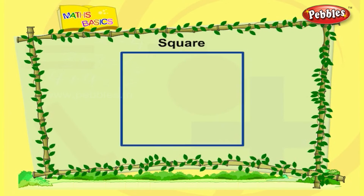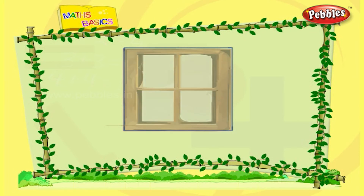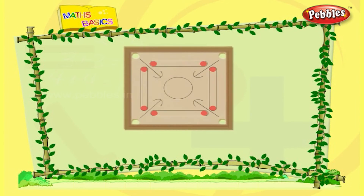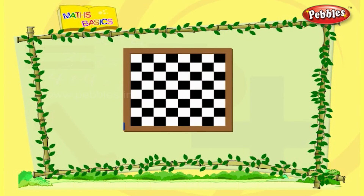This is square. Let us see some objects in square shape. A window. This is a carom ball. I like the game. A chess board.